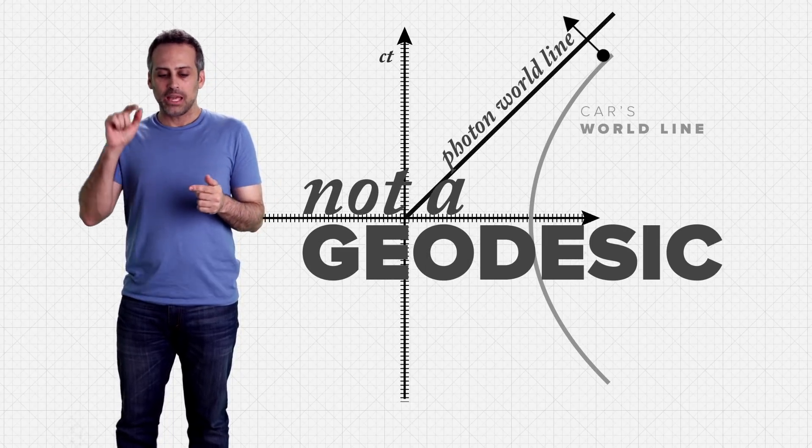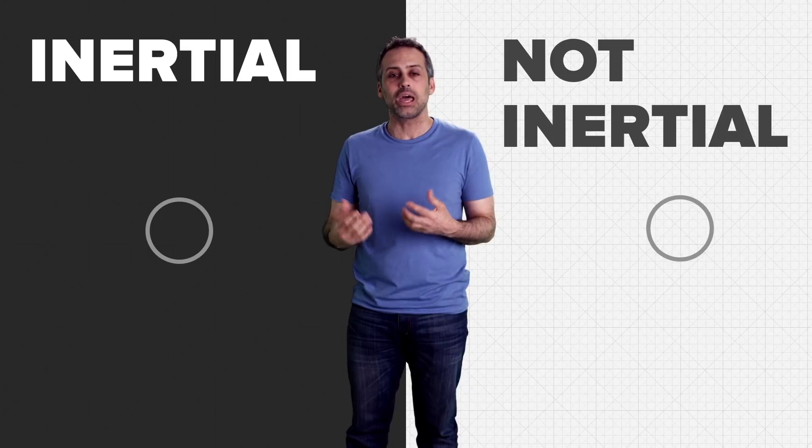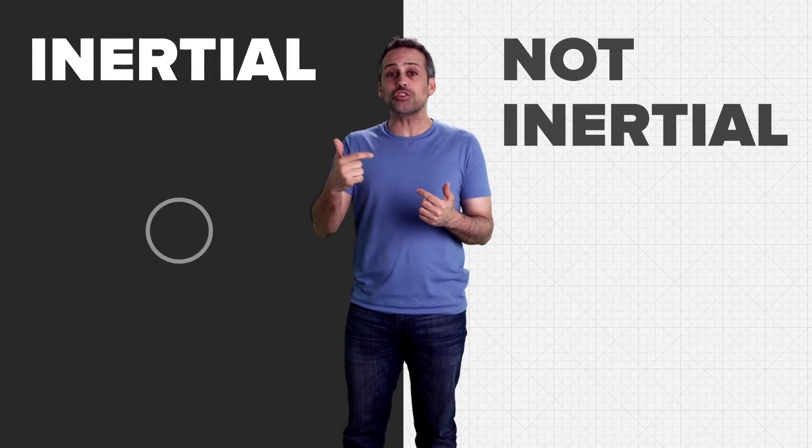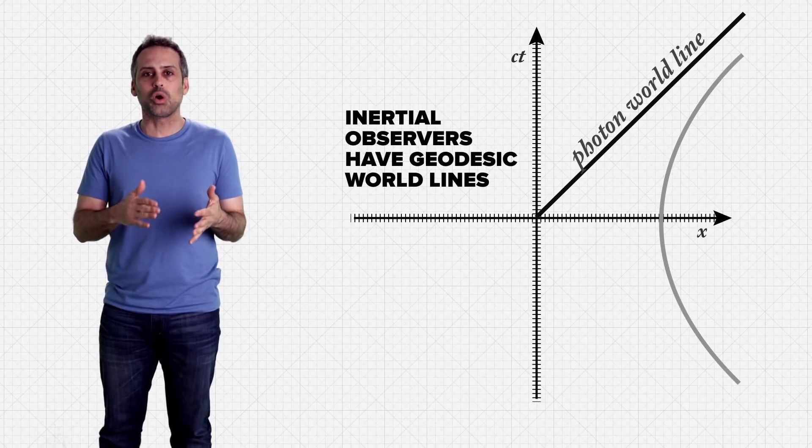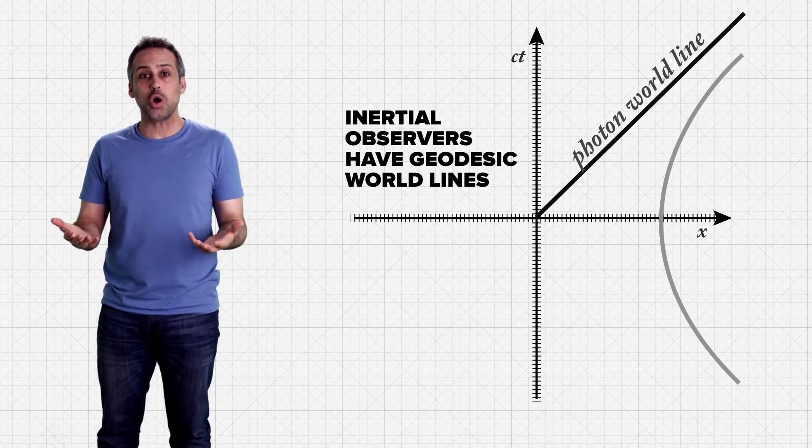And this is interesting. In Newtonian mechanics, we distinguish inertial and non-inertial observers dynamically, by using the floating ball test. But in spacetime, we can also distinguish those classes of observers geometrically. Inertial observers have geodesic world lines, and non-inertial ones don't.